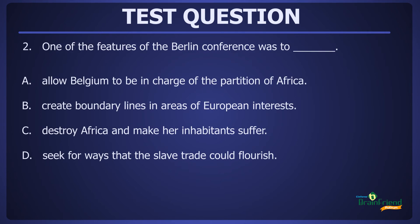Question 2: One of the features of the Berlin Conference was to — Option A: Allow Belgium to be in charge of the partition of Africa. Option B: Create boundary lines in areas of European interests. Option C: Destroy Africa and make her inhabitants suffer. Or Option D: Seek for ways that the slave trade could flourish. The correct answer is Option B — one of the features of the Berlin Conference was to create boundary lines in areas of European interests. I hope you learned something new from today's lesson about the Berlin Conference and the partition of Africa. Till we meet again, bye!